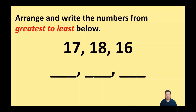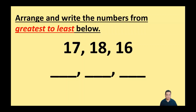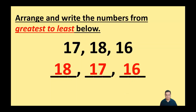Again, we're going to arrange and write these numbers from greatest to least below. I've got these three numbers here — which one goes first? What's the greatest number, the biggest? Correct, it's 18, and then what's the next number following that? Yes, 17, and then what's the final number? It's pretty obvious, it's 16.